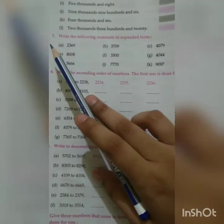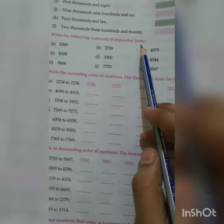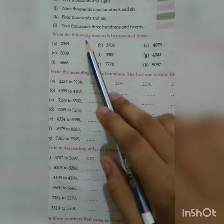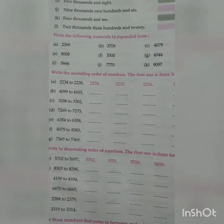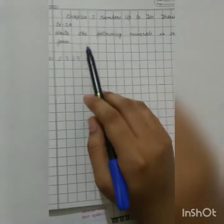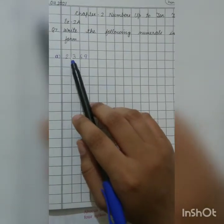The next question, question number 7 is, write the following numerals in expanded form. Now you have to expand these numerals. So copy down this question and let me tell you what you have to do. Write the following numerals in expanded form. So your first part, 2,3,6,9. So first of all,